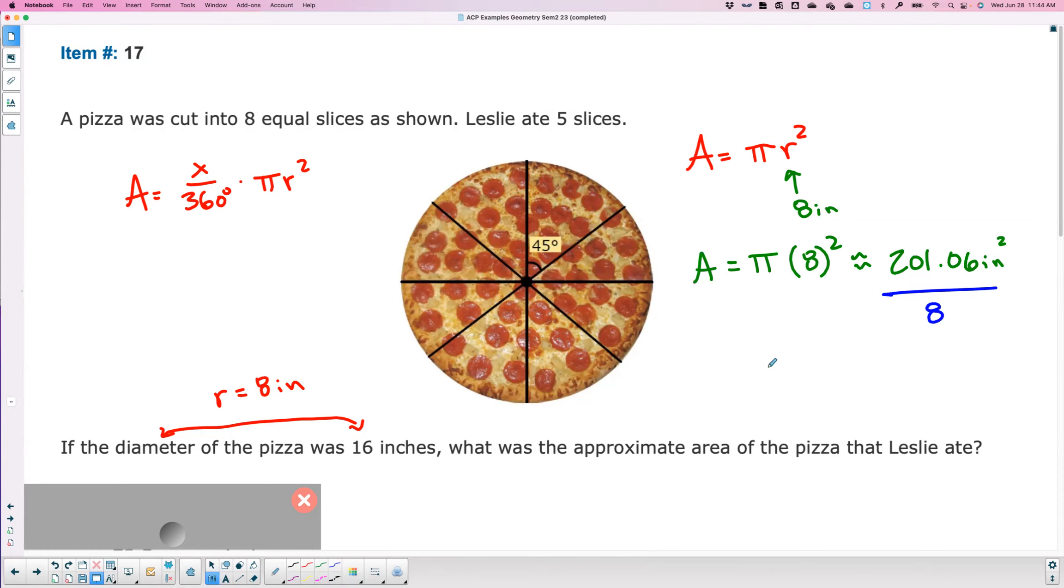What do you get when you do that? You get 25.1328. Now that's per slice.